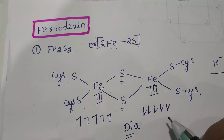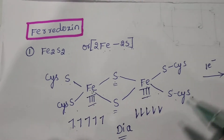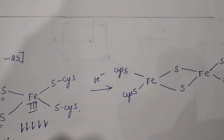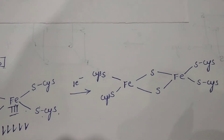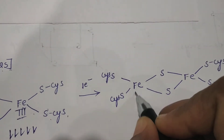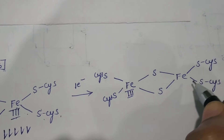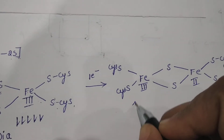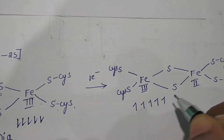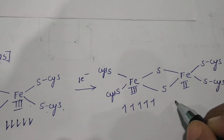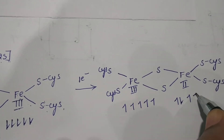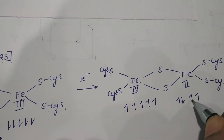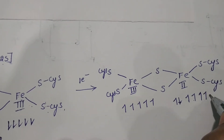So S is equal to zero, diamagnetic. It will take one electron, and this is the reduced form of ferredoxin. Here Fe is in the plus-three oxidation state and here Fe is in the plus-two oxidation state. So here we count five electrons, and here we count four electrons plus one extra electron, giving five total.